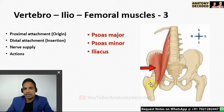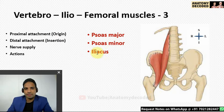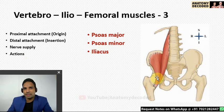Iliacus has its proximal attachment from the upper two-thirds of the iliac fossa. Together these muscles form the ilio-psoas tendon, which attaches to the lesser trochanter of the femur. Nerve supply: psoas major and minor are supplied directly by lumbar nerves; iliacus is supplied by the trunk of the femoral nerve before it divides. Their action is primary flexion at the hip joint.